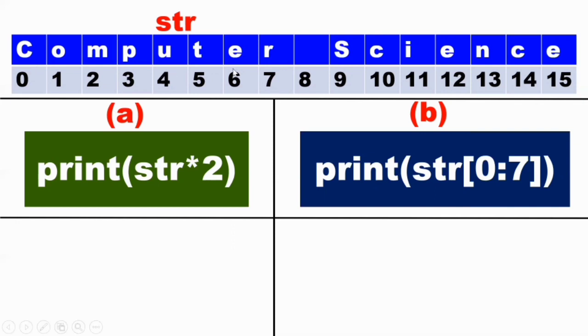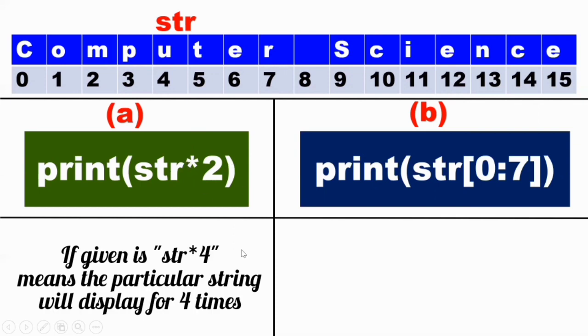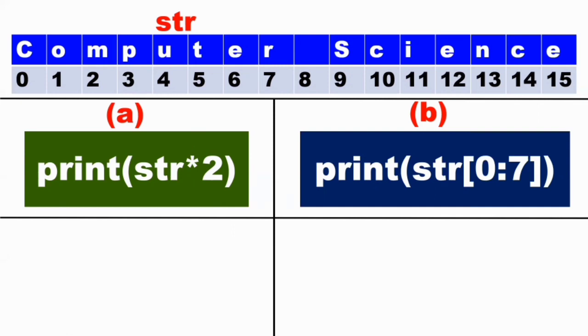For example, computer science with star 2 means the string will print two times. STR star 4 would print computer science four times. So the concept is string repeating.